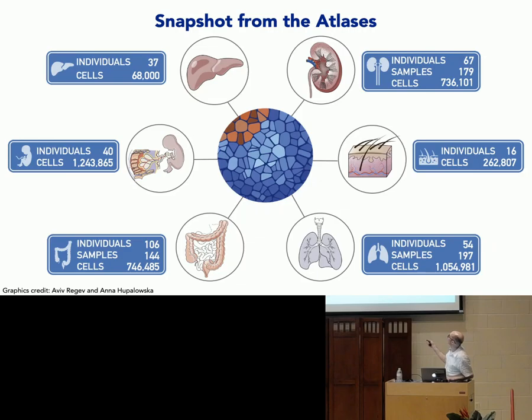Right now a number of these projects are ongoing. There's a skin Atlas project, a kidney Atlas project, a gut Atlas project, lung, human development, and liver. And eventually we could have some kind of Google Map of the body where we can understand more about any of the parts of the body.